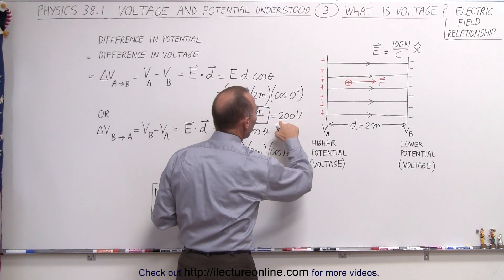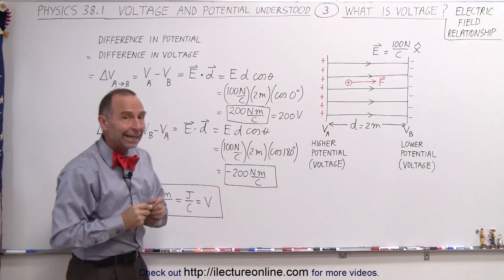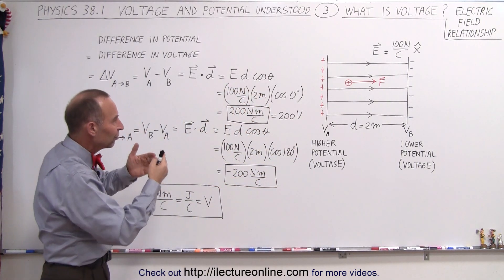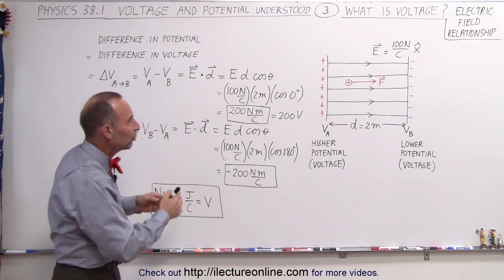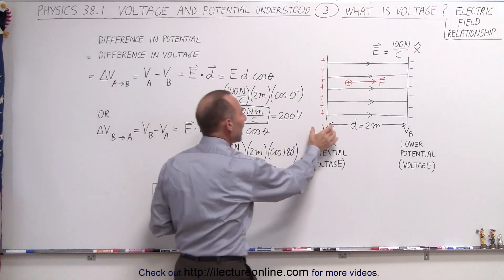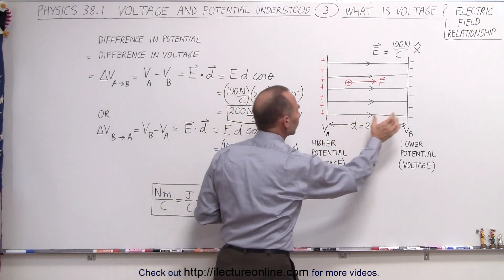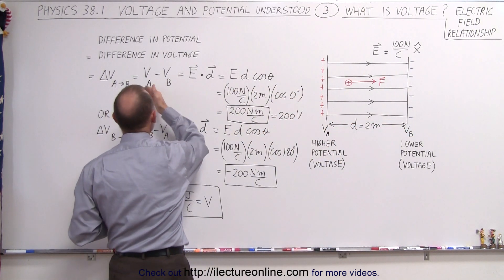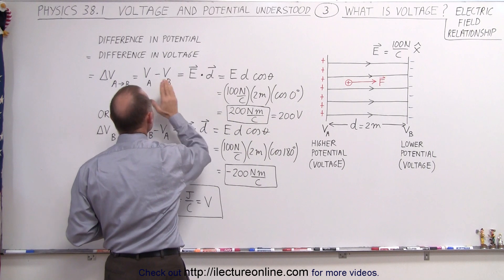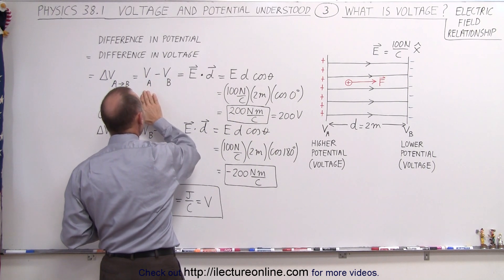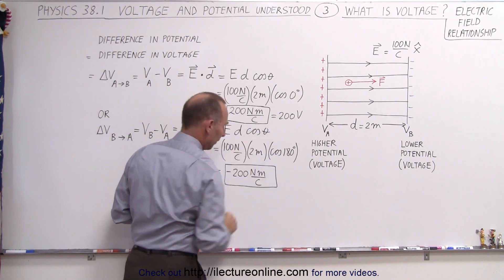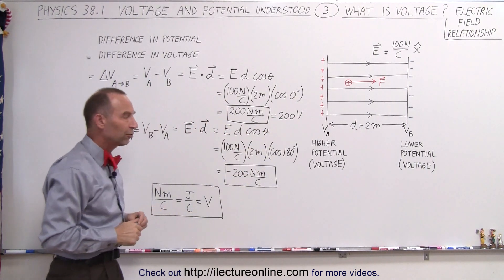We can write this as being equal to 200 volts. Notice it's positive because it gives us the difference between the voltage at A and the voltage at B — V_A being a higher voltage — so we expect a positive answer.